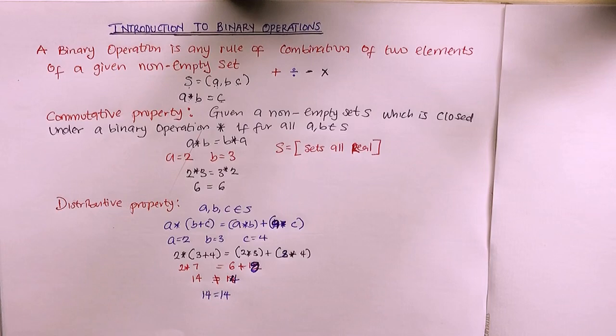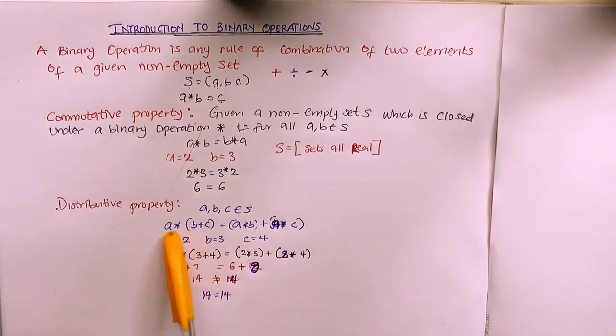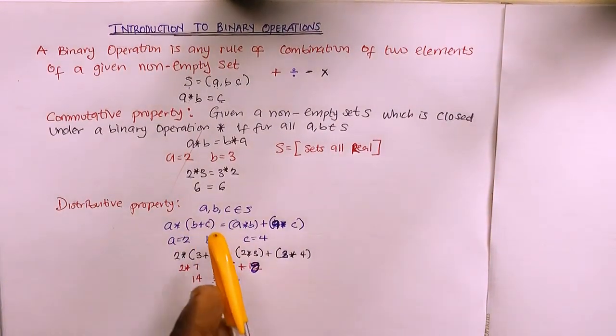The key point is: if you have a star (b plus c) with a bracket, then a is distributed to both b and c, giving a star b plus a star c. That's the distributive property. Now another property we should consider is the associative property.